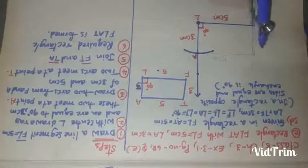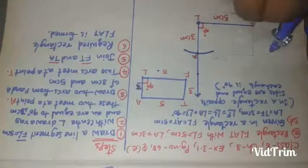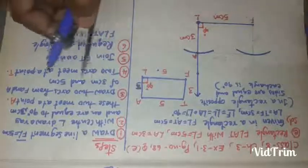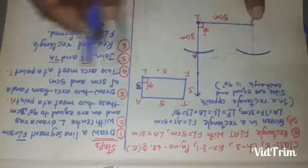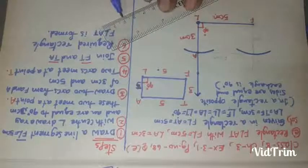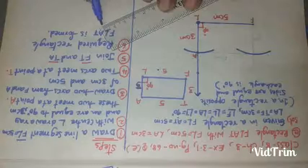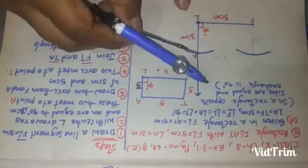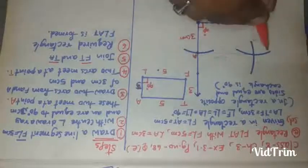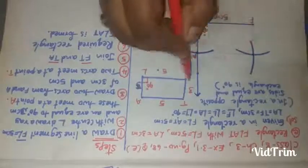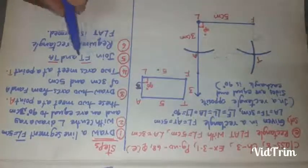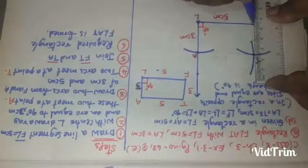Now from F, draw an arc of 3 centimeters to locate T. Then from A, draw an arc of 5 centimeters. See the two arcs — one point on 5, the other point on 0. These two arcs meet at a point, which is T.